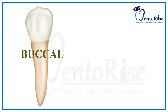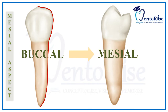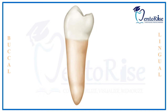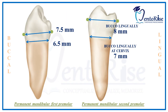Starting with the mesial aspect first, we will be discussing the features of the mesial aspect by comparing with the mesial aspect of the mandibular first premolar. Starting with the first heading — dimensions — the buccal-lingual dimension at the greatest curvature is 8 mm, while the buccal-lingual dimension at the cervix is 7 mm. The crown and root of the second premolar are wider buccal-lingually than that of the first premolar.